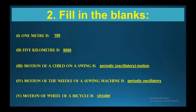Five kilometers is 5000 meters. Motion of a child on a swing is periodic motion, also called oscillatory motion. Motion of the needle of a sewing machine is also periodic or oscillatory motion. Motion of the wheel of a bicycle is circular motion.